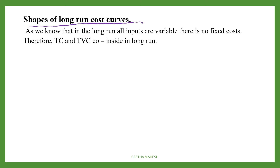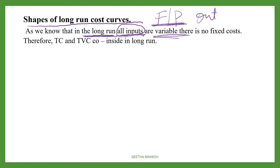In the long run, all factors of production are variable. That means all inputs are variable. The period is so long that you can bring a change in all the factors of production in order to bring a change in the level of output. In the long run, there won't be any fixed cost — there will be only variable cost. Therefore, total cost will coincide with the total variable cost in the long run.